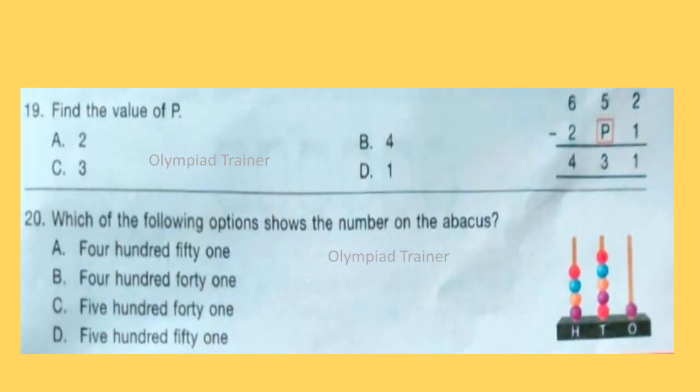Question 19: Find the value of P. Answer is Option A, 2. 5 minus P is 3, so P will be 2.